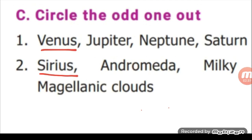Next, Sirius, Andromeda, Milky Way, Magellanic clouds. Sirius is the odd one. It is the brightest star in the night sky. The other three - Andromeda, Milky Way, Magellanic clouds - are galaxies.